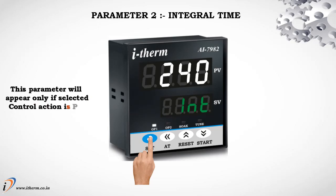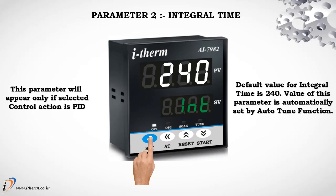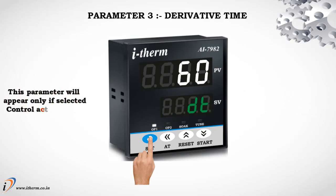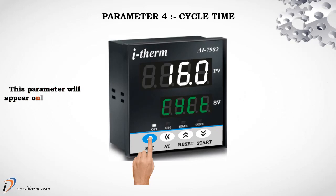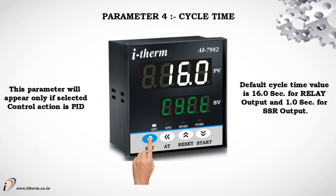Parameter 2: Integral time. This parameter will appear only if selected control action is PID. Default value for integral time is 240; value is automatically set by auto-tune function. Parameter 3: Derivative time. This parameter will appear only if selected control action is PID. Default value for derivative time is 60; if set to 0, this function will be disabled. Value is automatically set by auto-tune function. Parameter 4: Cycle time. This parameter will appear only if selected control action is PID. Default cycle time value is 16.0 seconds for relay output and 1.0 second for SSR output.